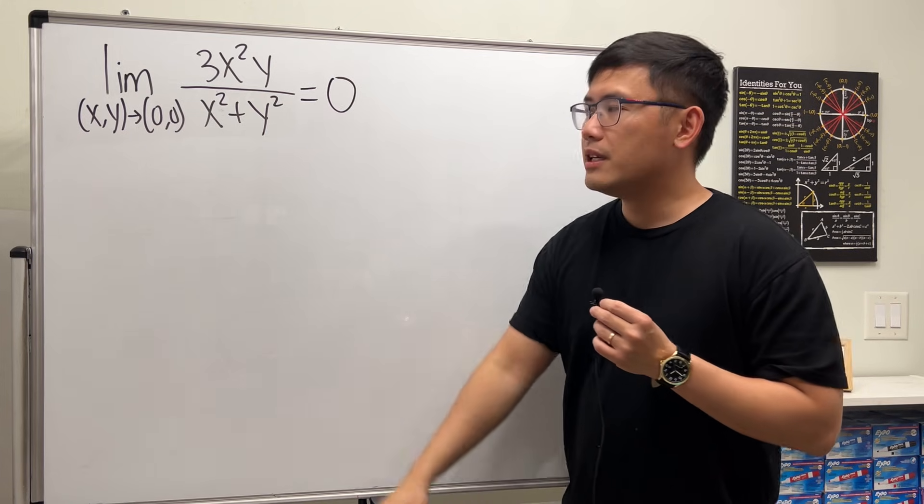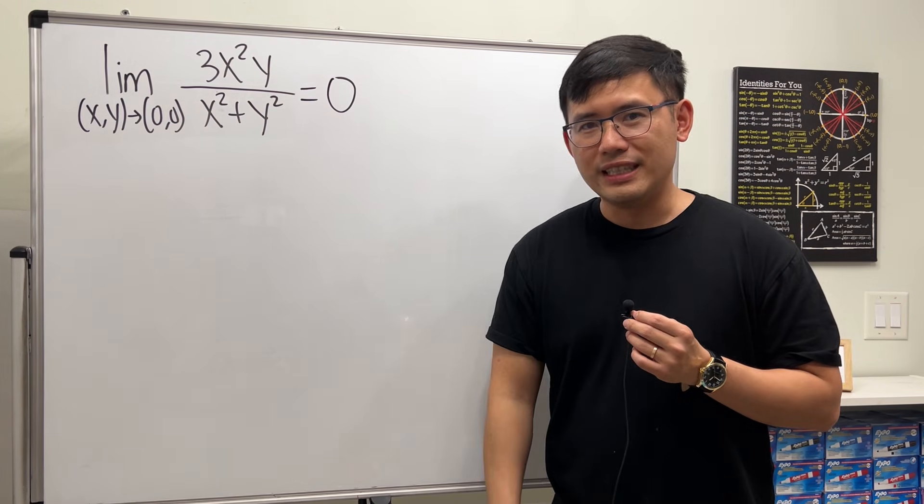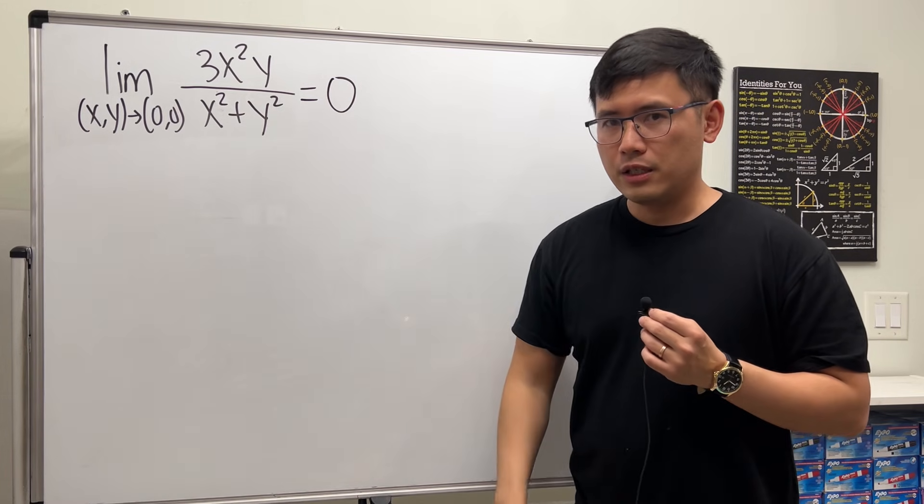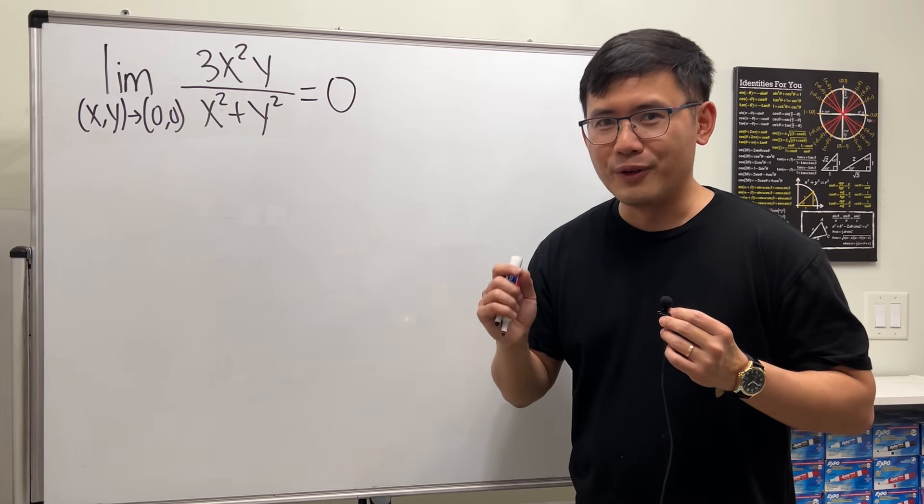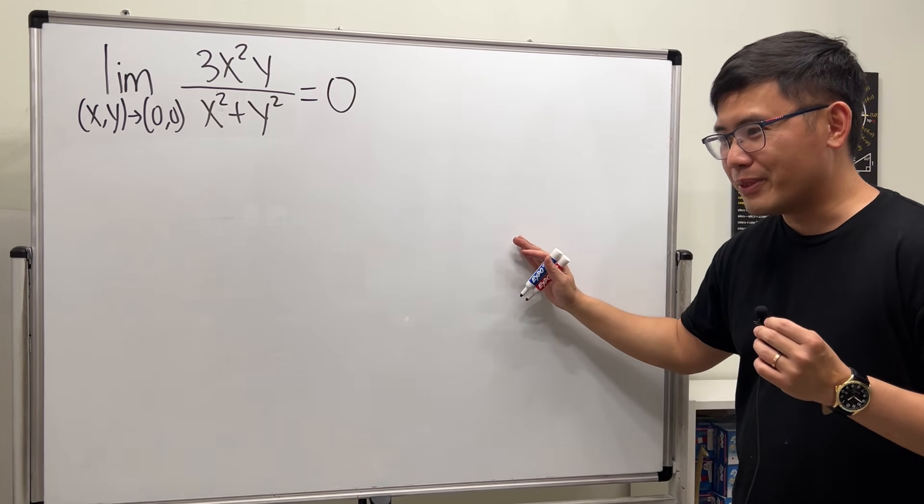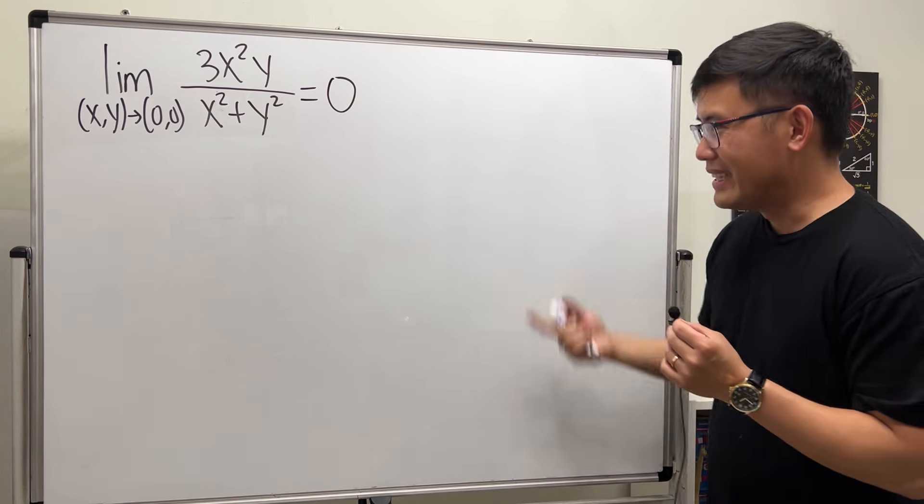And you know it. Whenever we have to prove a limit, we better use the epsilon-delta definition. And yes, this is a multivariable case, so we'll be doing the multivariable version of the epsilon-delta definition. And this is the first one that I'm doing with you guys on YouTube. Let's have a look.